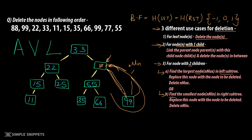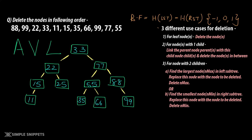I hope you get the idea of the three different use cases for deletion — this is something we've already seen in the binary search tree tutorial, just a refresher. Now let's start deleting the nodes in the following order. Let's first delete 88. Where is 88? 88 is this node — this is use case two, which is for a node with one child, because 88 has one child. You have to link the parent node of 88, which is 77, with 88's child, which is 99, and then delete 88. So you will simply have 99 linked with 77.